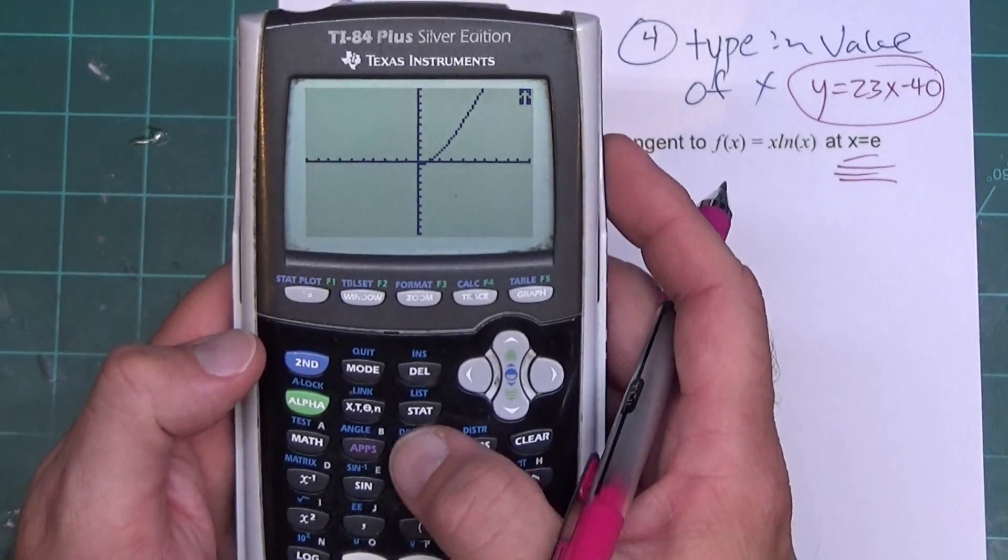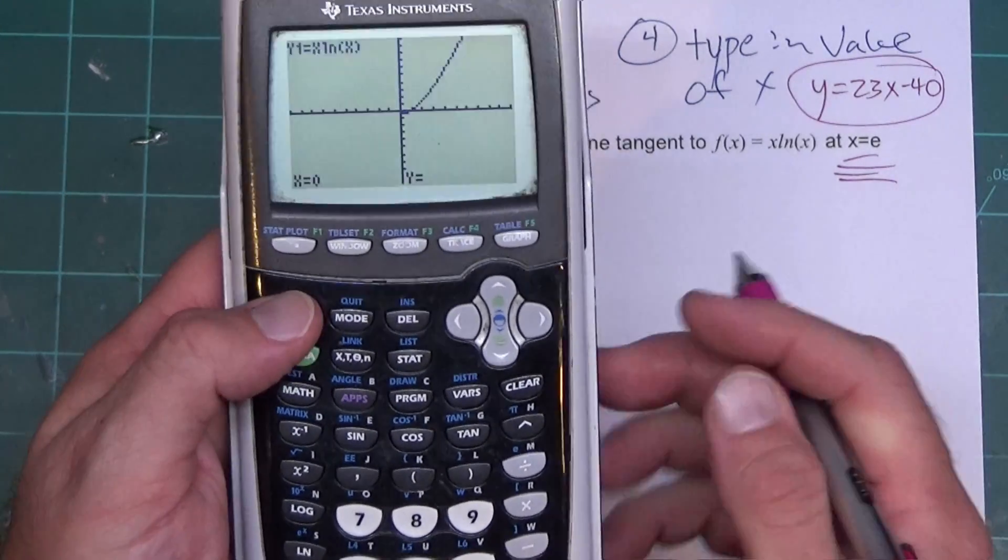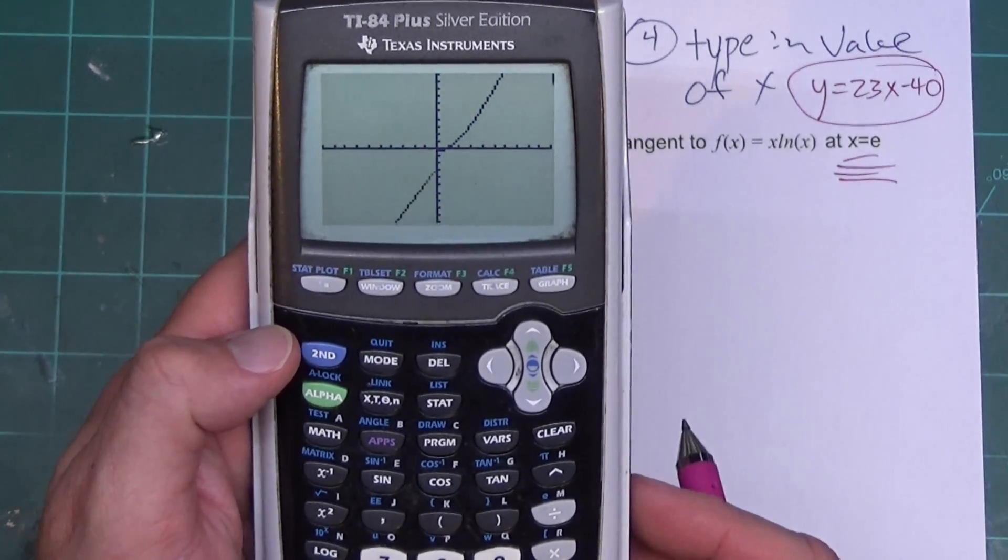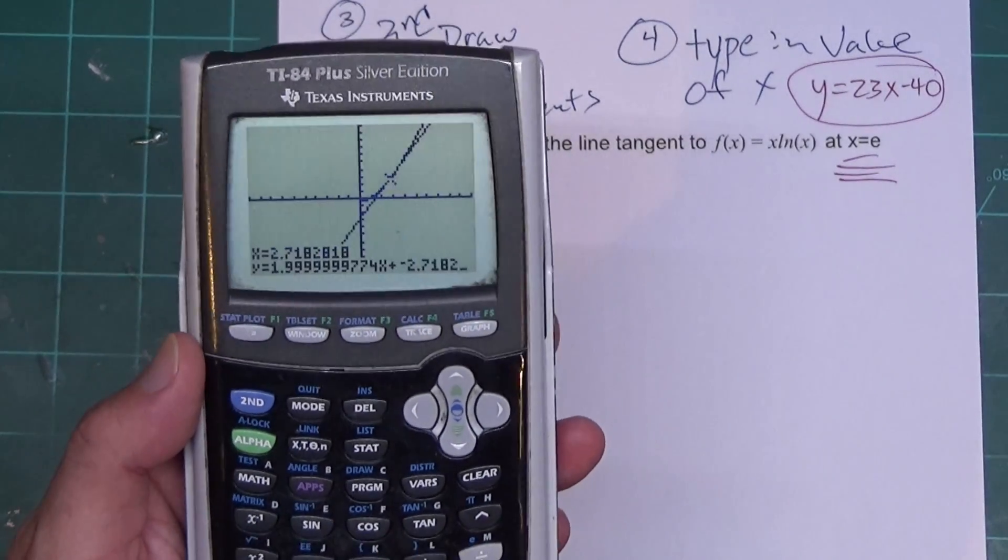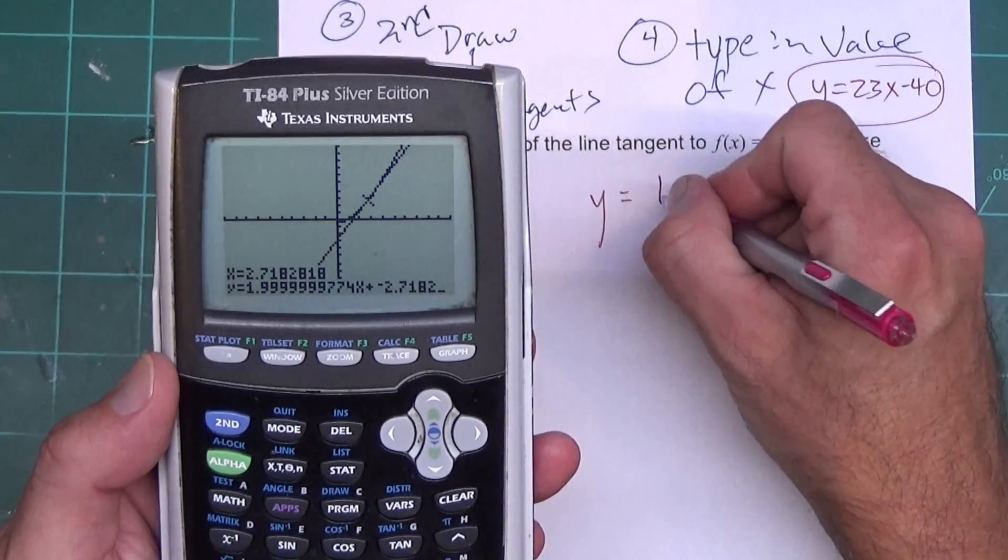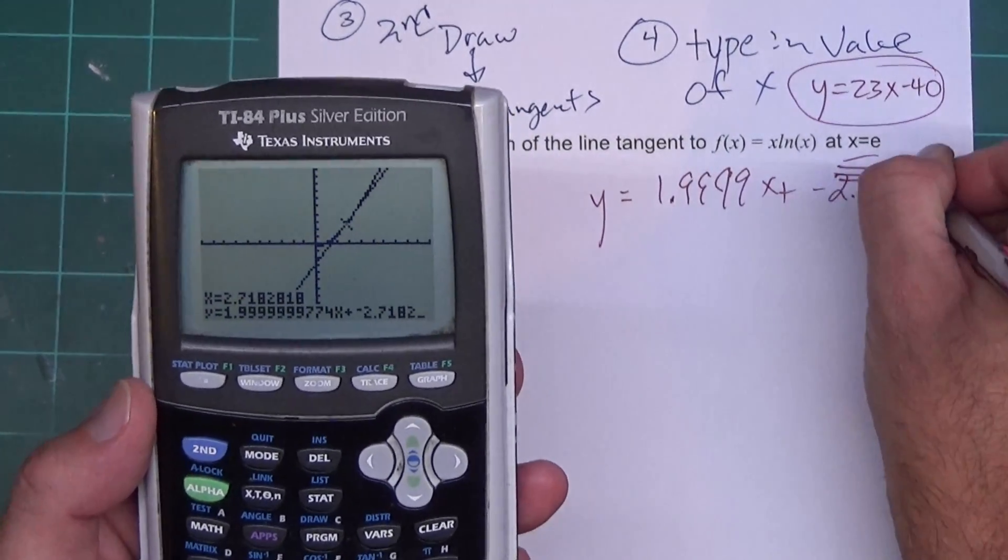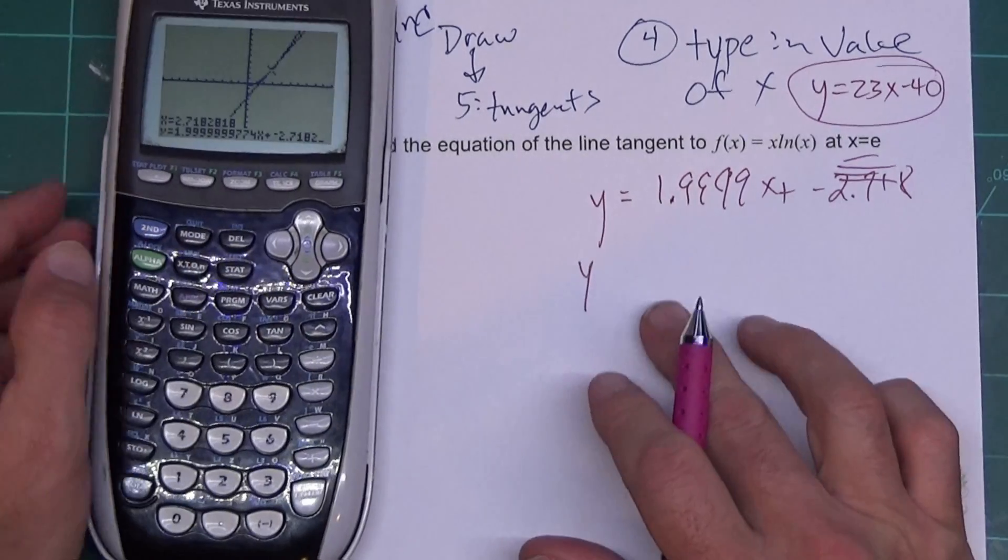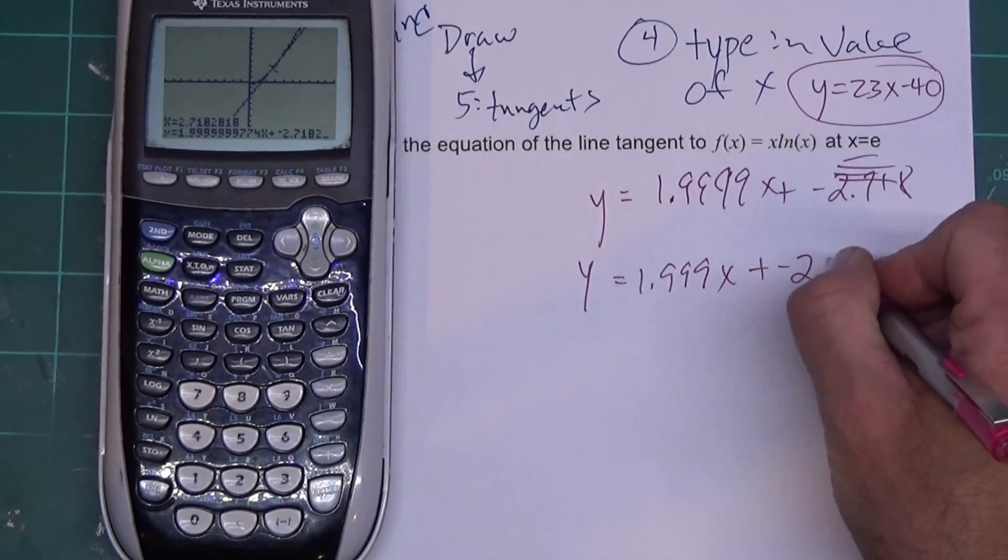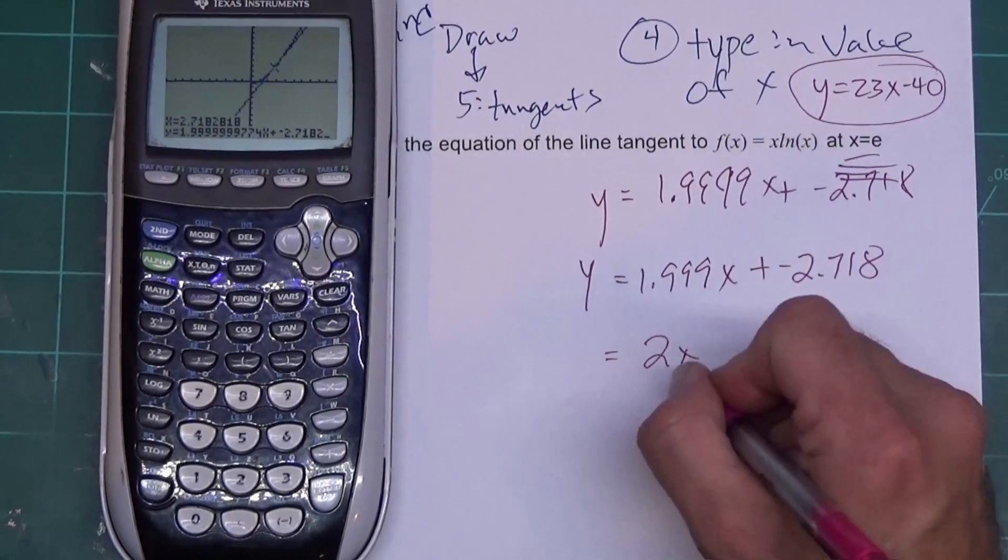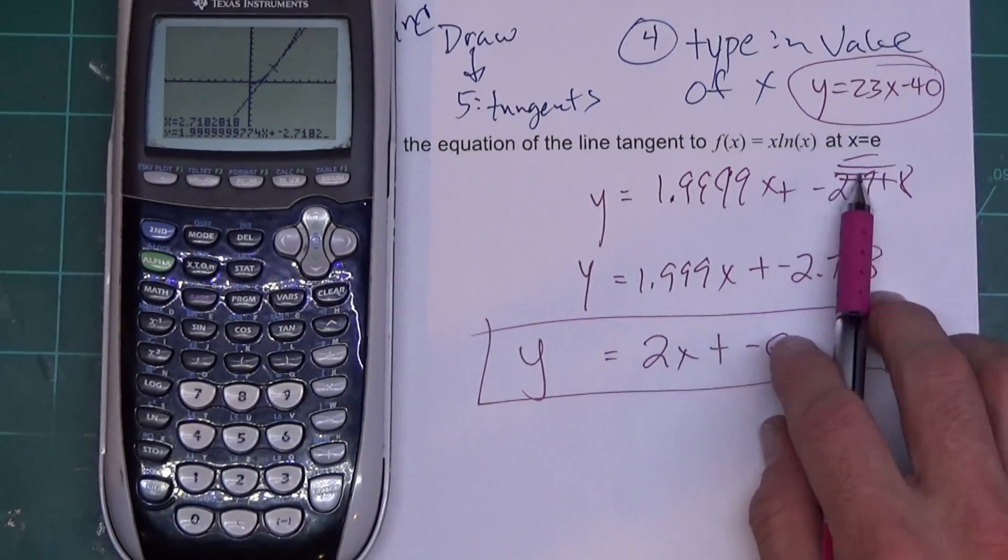I'm going to hit 2nd Draw. And I'm going to go down to number 5 for tangent. Now the e button is right here above the divide. So I'm going to hit 2nd divide and press Enter. Now some teachers think it's fun to do that where they have weird numbers in here. And you notice I get the equation of the tangent line is y equals 1.999x plus negative 2.718. So let me write that down here where I'm not overriding part of the problem. Y equals 1.999x plus negative 2.718. Now if you know your numbers, this is really the same thing as 2x plus negative e. And there's the equation of the tangent line. I just want to show you it works with weird number values.